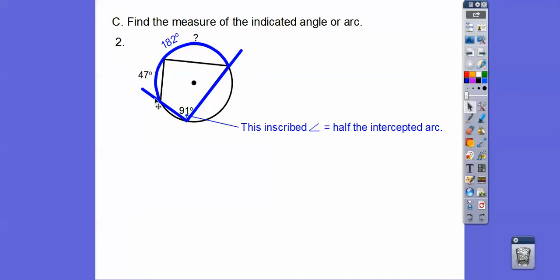That's for the whole arc all the way around. So if we take off that 47 right there, that's going to give us the remainder of that. So the question mark is 135 if I did my subtraction right.